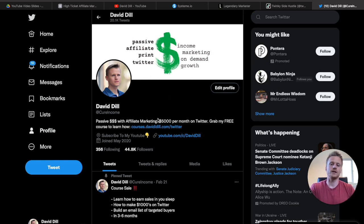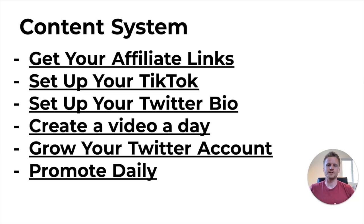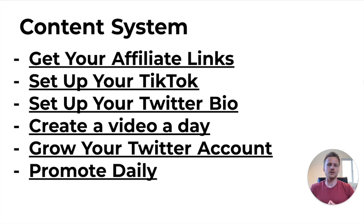I recommend creating a Twitter account, engaging with other accounts, creating viral tweets, and adding your landing page in your bio. When you combine both of those traffic sources, you're going to have tons of free traffic to collect email leads. The content system I recommend: get your affiliate links from Legendary Marketer, set up your TikTok and Twitter bios, create at least one video a day on TikTok based on content others in your niche have created, grow your Twitter by engaging under bigger accounts, and promote your landing page daily to collect emails and build your affiliate marketing business.